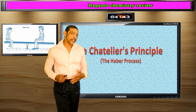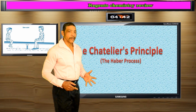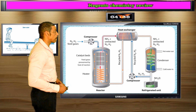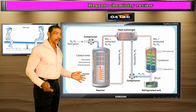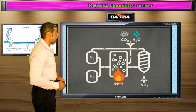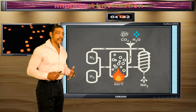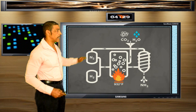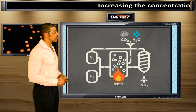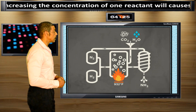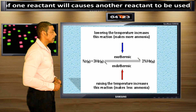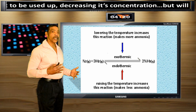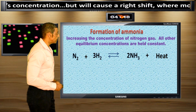The Haber process is an excellent example of the real-world application of Le Chatelier's principle. The Haber process is used commercially to produce ammonia gas. It involves a homogeneous gaseous equilibrium reaction where the application of certain stresses will affect the amount of product formed. Some examples of how the reaction will respond to certain stresses include the following.